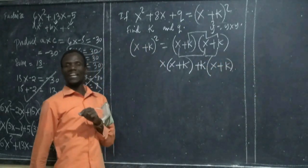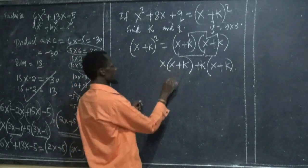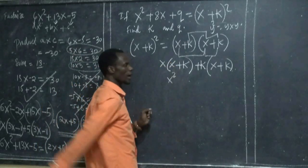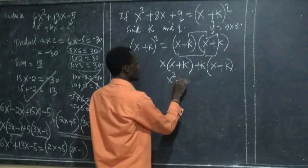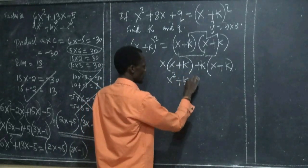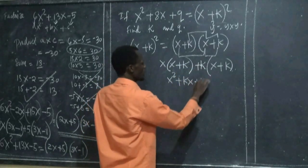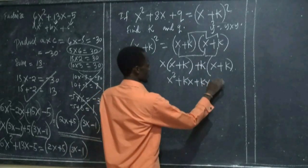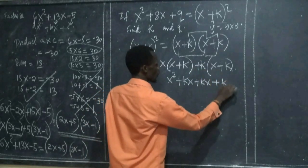Then let us open the bracket. x times x, that is x squared. Then plus kx. Then plus kx. Then plus this and this one is k squared.